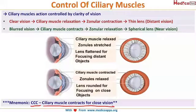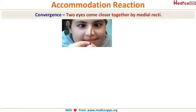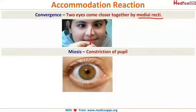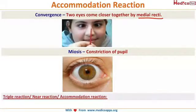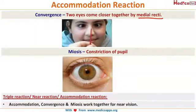The second component of near vision is convergence — the two eyes come closer together by the action of the medial rectus. The third component is miosis, which is constriction of the pupil. Together, accommodation, convergence, and miosis form what is called the triple reaction, or the near reaction, or the accommodation reflex — all three help you read your textbooks.